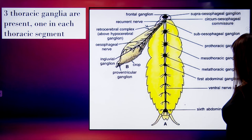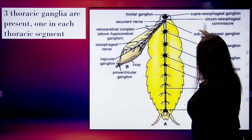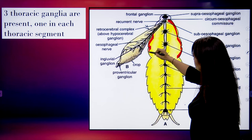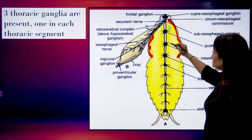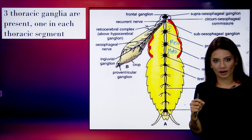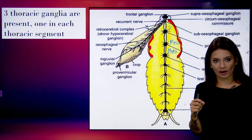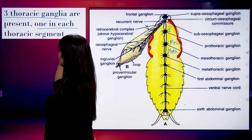When talking about the thorax region, there are three segments: the prothorax, the mesothorax, and the metathorax. Each segment of the thorax has one pair of ganglia. So there are three thoracic ganglia, one in each thoracic segment.